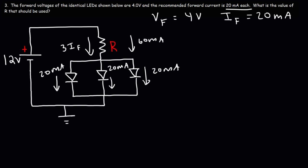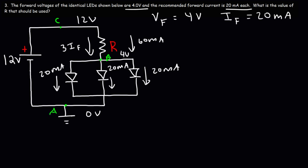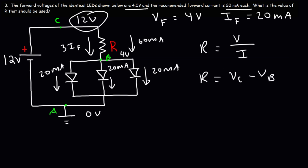This is the ground at zero volts. Let's call this point A, point B, and point C. Point C is at 12 volts. Point B is going to be at 4 volts, because the voltage across each LED is 4 volts. So anywhere along that line it's 4 volts relative to A. To calculate the resistor value, it's the voltage across it divided by the current flowing through it. The voltage across the resistor is VC minus VB, and the current is 3 times IF because we have three identical LEDs in parallel.